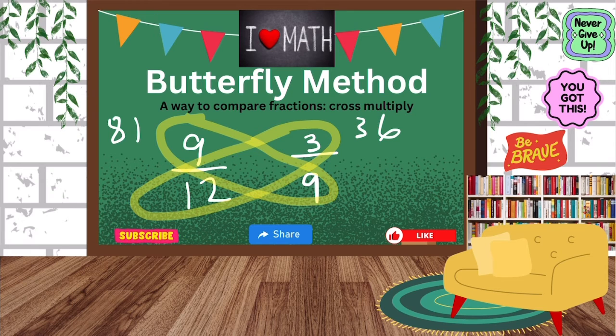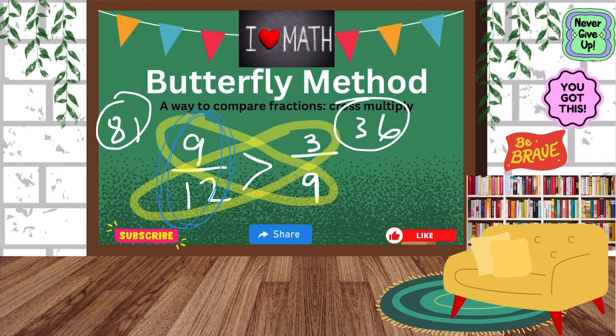I'm sorry, guys. So now we're going to work with the 81 and the 36. So we know 81 is bigger than or greater than 36. So therefore, nine-twelfths is greater than three-ninths. There you go. I hope you guys have fun. Bye.